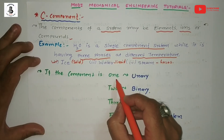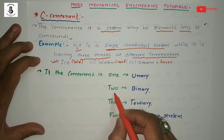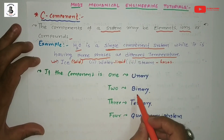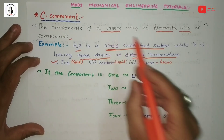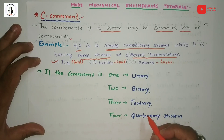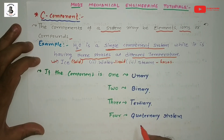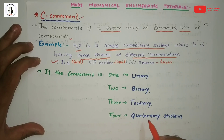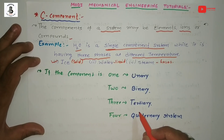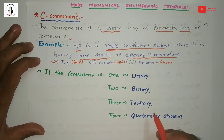If the component is single (one component), it is called unary. If two components are used to form the system, it is called binary. If three components are used, it is ternary. If four components are used to form the system, it is called quaternary. These systems are isolated bodies with different components that make different kinds of systems, each having different phases at different set of conditions.